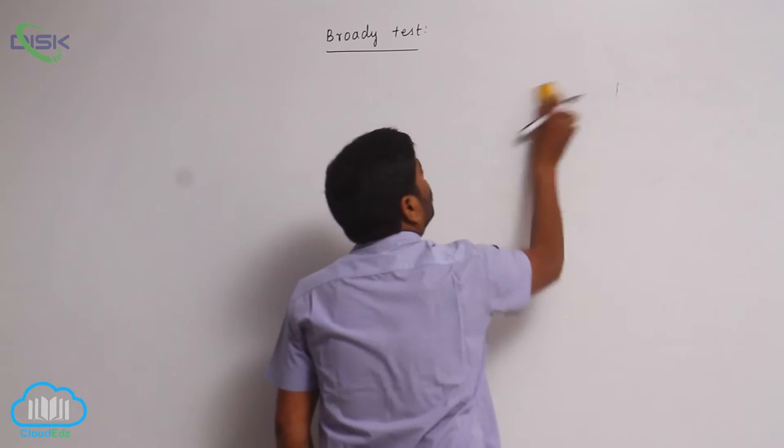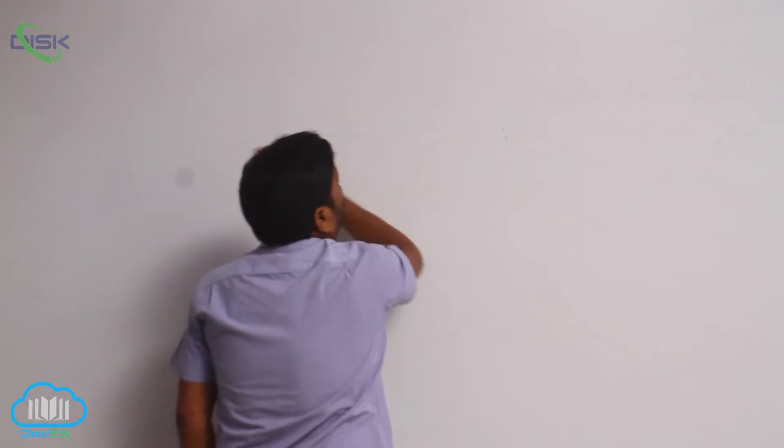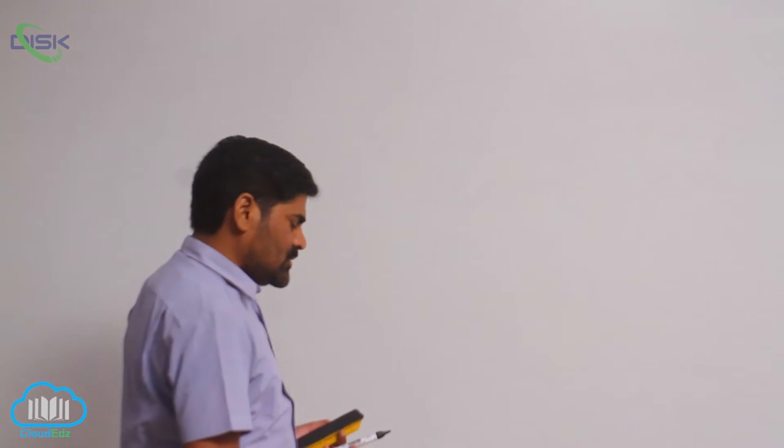Now, due to the presence of an electron withdrawing group, the adjacent carbon is called the alpha carbon. Some reactions related to alpha hydrogen are known as aldol condensation.